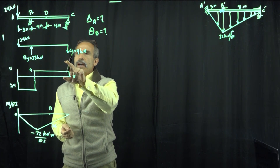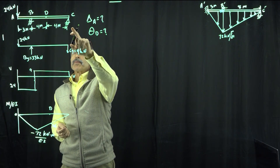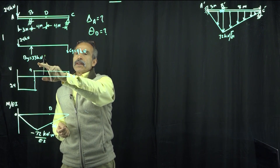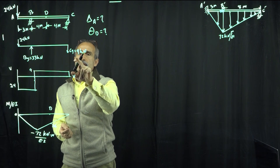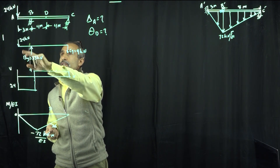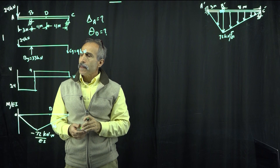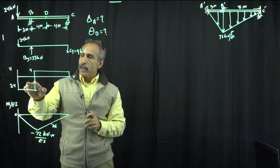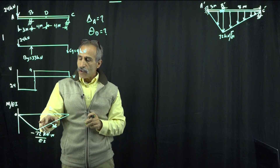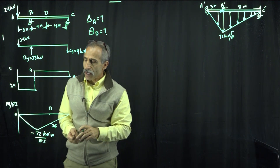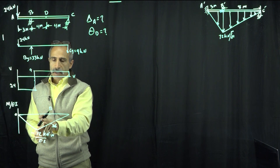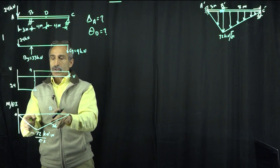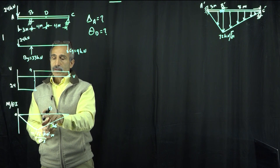I've done this in class many times. If I take a summation of moments about point C, I can calculate the reaction at BY. Then summation FY will give me CY. That gives us the reaction forces. And then I have my applied force of 24 kilonewtons. From there, we draw the shear diagram, then continue to draw the moment diagram — let's call this the M over EI diagram.